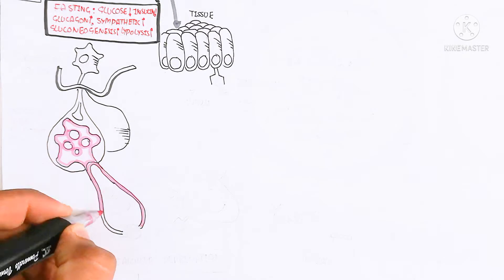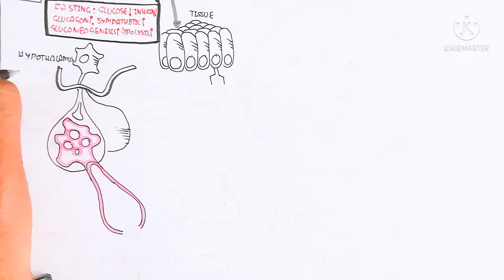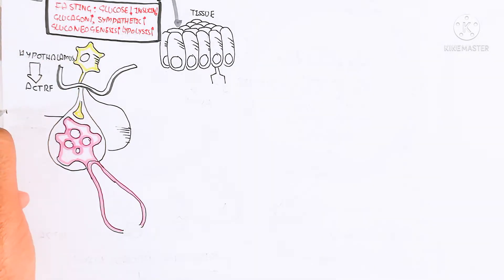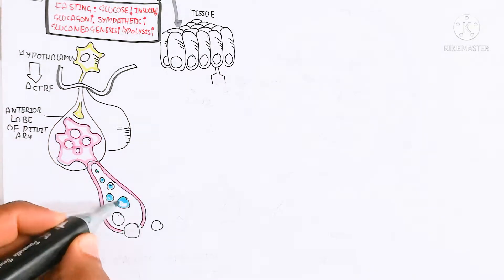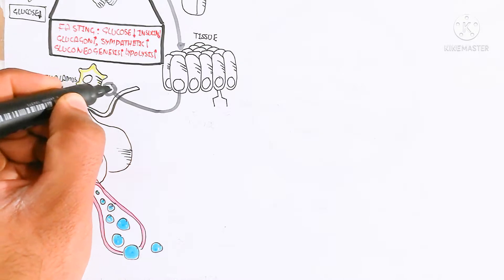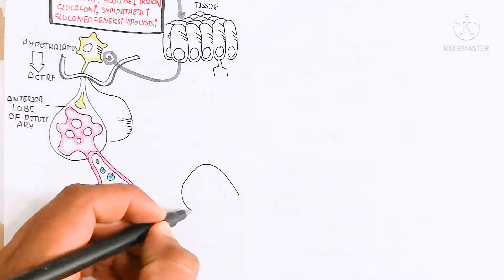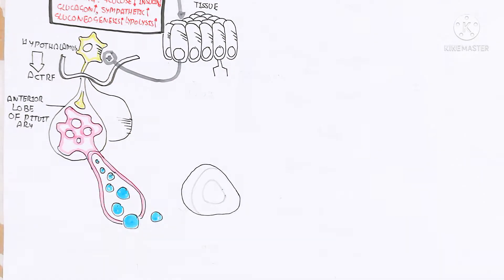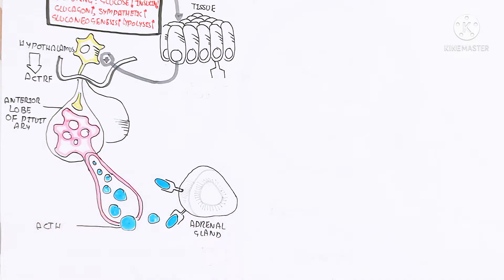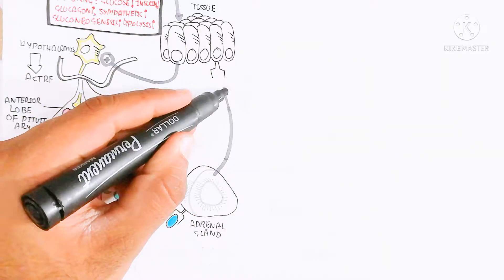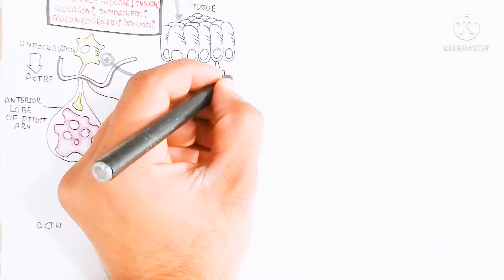Let's begin to understand the endocrinology. The hypothalamus, sensing glucose deprivation, triggers the release of adrenocorticotropic releasing factor, which stimulates the anterior lobe of the pituitary to produce adrenocorticotropic hormone (ACTH), which in turn stimulates the adrenal gland to produce epinephrine.